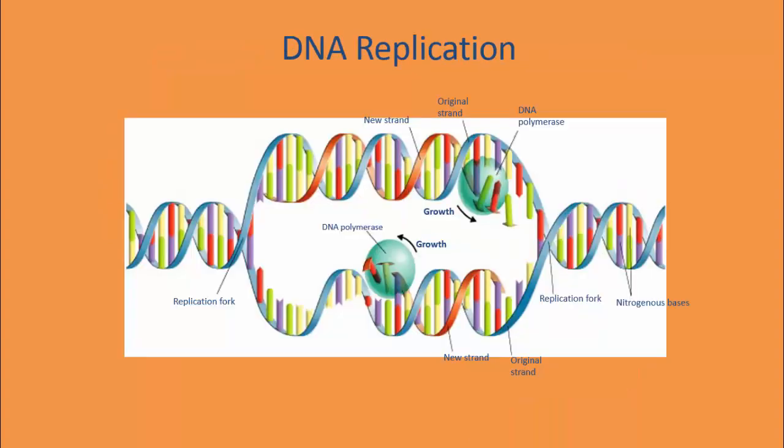Here's an initial overview of DNA replication. The replication actually occurs via the enzyme DNA polymerase, and we have another enzyme that comes through first called helicase. Helicase unzips the DNA strands, then DNA polymerase comes through and fills in the corresponding base pairs, and that's how we get DNA replication.